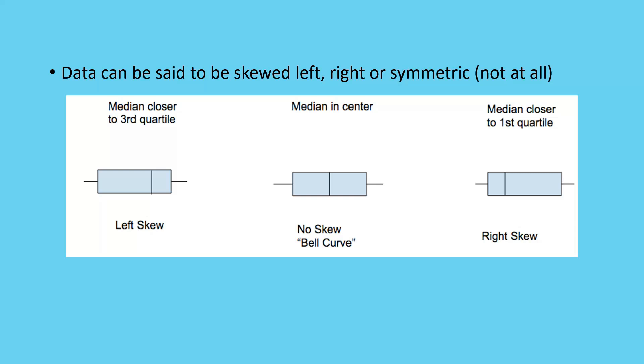There's no skew where the median is in the center. It's perfectly even between the two, so you can't see if it's leaning left or right. It's perfectly centered, so there's no skew, it's a symmetric one, or symmetrical.